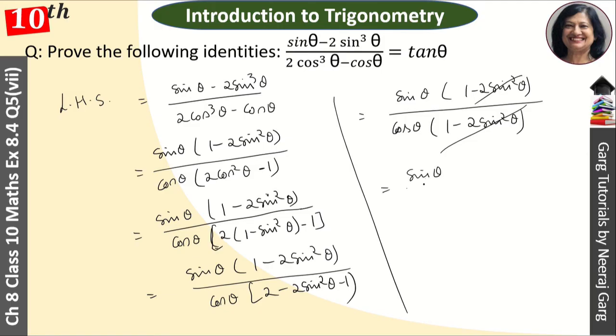Sin θ upon cos θ. What is it? Sin θ upon cos θ is tan θ, and this is what our RHS proved. I hope you understand the question properly.